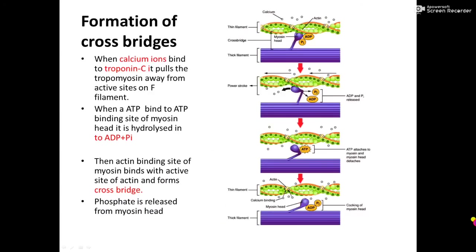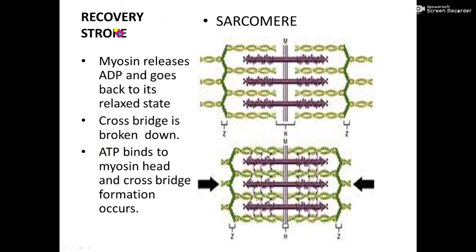As the myosin pulls the actin inwards, ADP is also released from the myosin head. Then another ATP molecule binds to the myosin head, causing the myosin head to become relaxed. When it binds to another ATP molecule, the cross bridge is broken down — there is no connection between myosin and actin. Whenever the myosin head binds to an ATP molecule, the cross bridge is broken down. That is known as the recovery stroke.